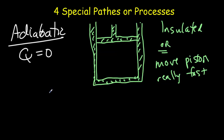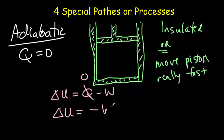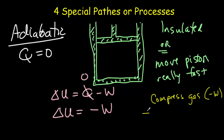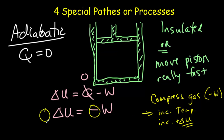Applying the first law to an adiabatic process — ΔU = Q − W — with Q = 0, we get ΔU = −W. For example, if we compress our gas, that is negative work, and that results in an increase in temperature. Remember: when thinking about internal energy, think temperature. So increasing temperature means a positive increase in internal energy. You can see how the signs hold up: if internal energy increases, it was negative work done.